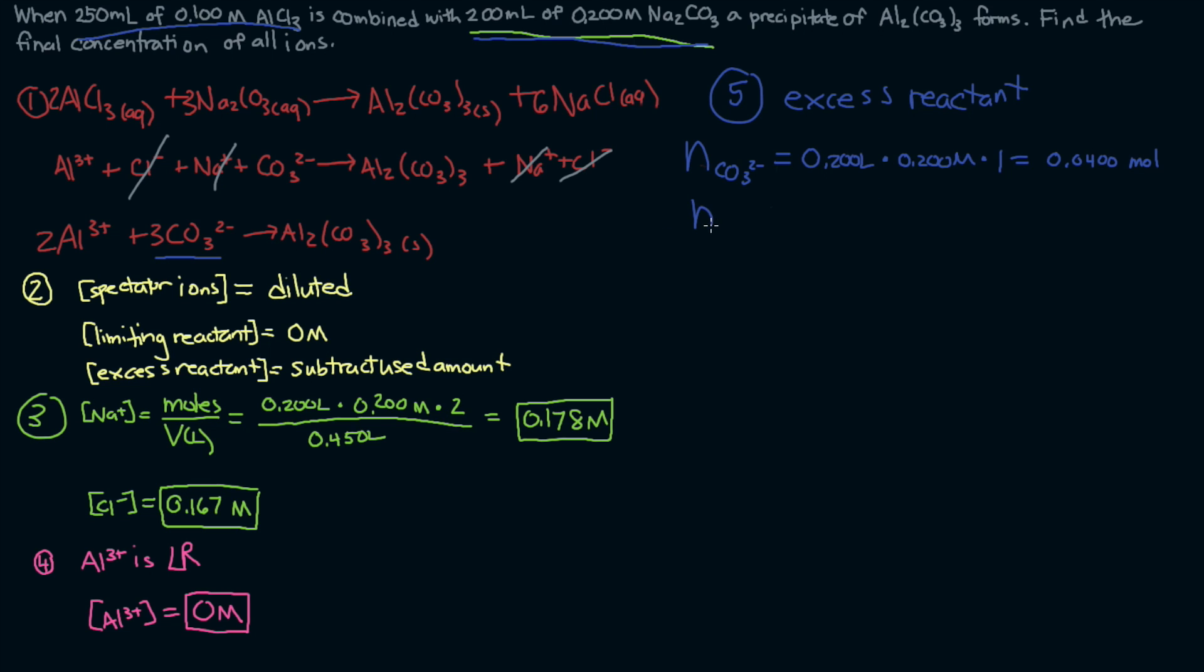In a similar fashion, we could find the number of moles of aluminum. We'll find that the number of moles of aluminum is 0.0250 moles. We know that aluminum is the limiting reactant, so we're going to use the moles of aluminum, 0.0250 moles of aluminum, to determine how many moles of carbonate are required in order to react to all of the aluminum.